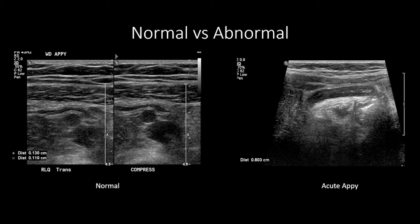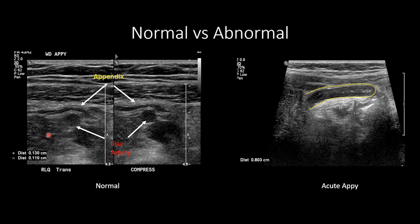Now let's look at a few normal versus abnormal examples. On the left, a case of a normal appendix — we can see the iliac arteries, the appendix overlying the iliac, and the psoas muscle. This appendix measures only about one to two millimeters, which is very impressive to visualize. On the right, an appendix that is substantially larger, measuring a diameter of eight millimeters, consistent with acute appendicitis on its own. In addition, we see an area of very echogenic fat adjacent to this appendix, again representing inflamed fat stranding.